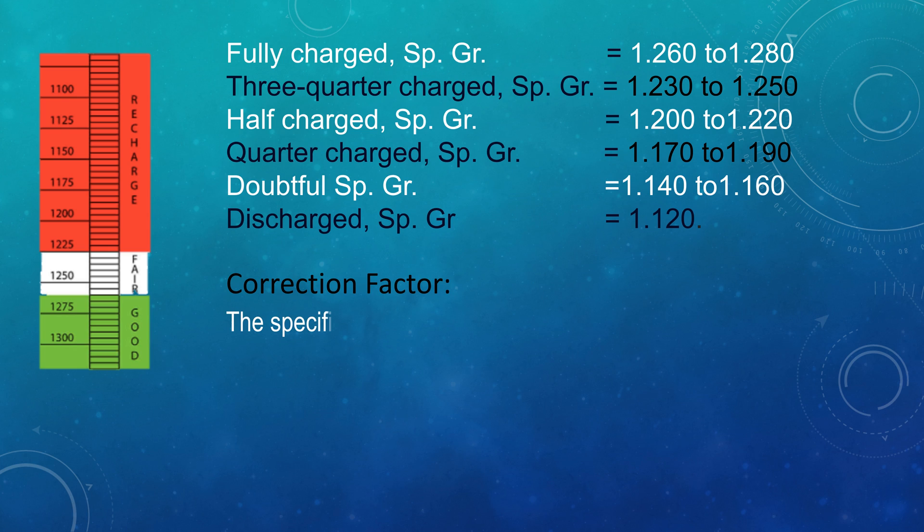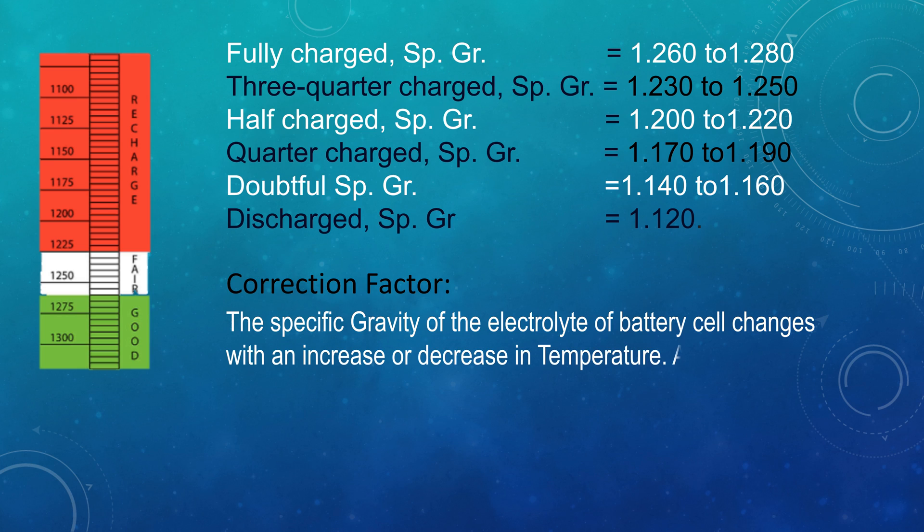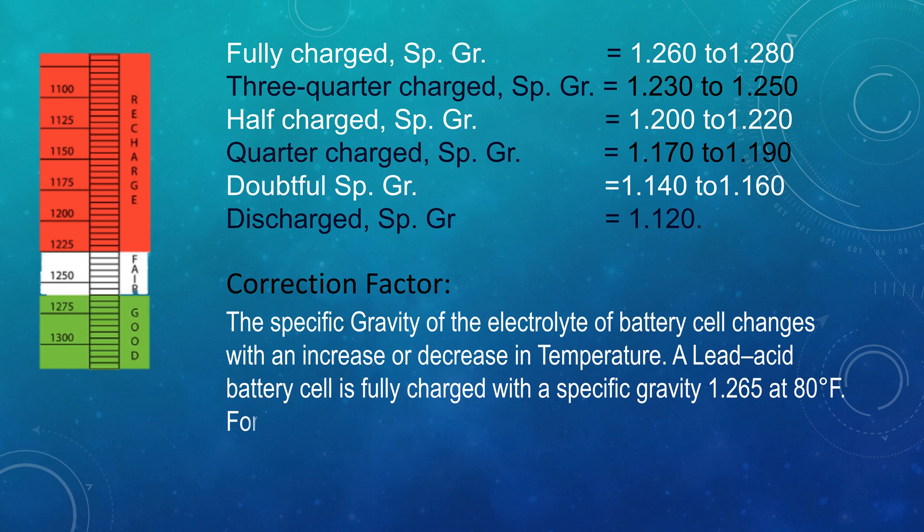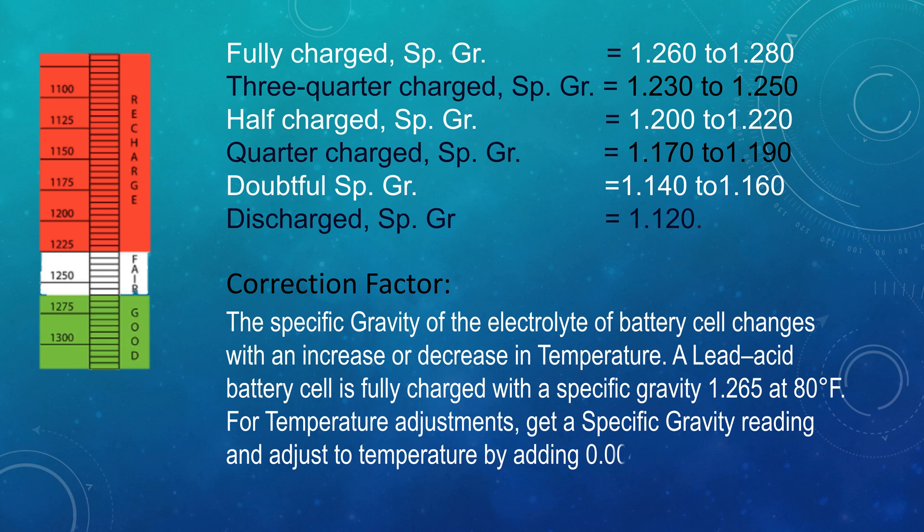Correction factor: The specific gravity of the electrolyte of battery cell changes with an increase or decrease in temperature. A lead acid battery cell is fully charged with specific gravity 1.265 at 80 degree Fahrenheit. For temperature adjustment, get a specific gravity reading and adjust to temperature by adding 0.004 for every 10 degree Fahrenheit above 80 degree Fahrenheit and subtracting 0.004 for every 10 degree Fahrenheit below 80 degree Fahrenheit.